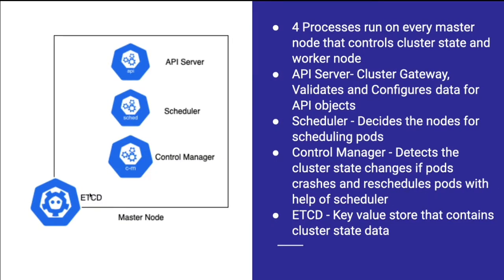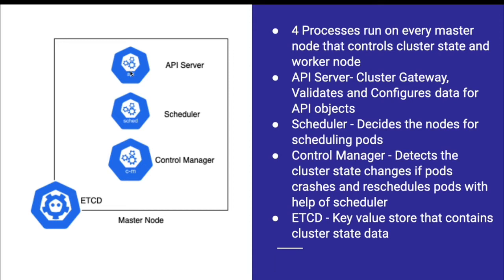The master node will have four different processes running that control the cluster state and worker nodes. These processes are: API server, scheduler, controller manager, and etcd. Let's understand the API server process first. As a user, if I want to interact with Kubernetes, the API server acts as a cluster gateway — it's a kind of entry point or gatekeeper. The API server is the first point where the request comes in, and it mainly validates the request before forwarding it to another process.